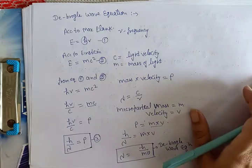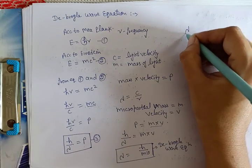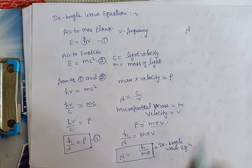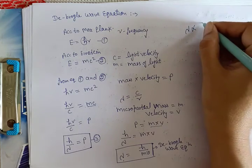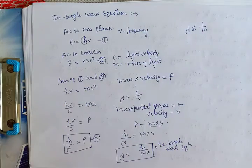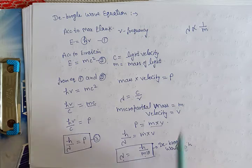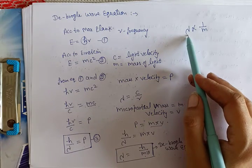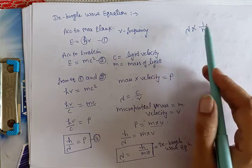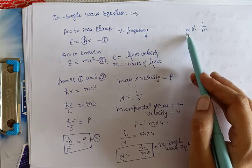اس equation میں wavelength lambda یہ inversely proportional ہوتا ہے mass کے۔ کسی بھی particle کا mass جیسے جیسے بڑھتا جائے گا اس کے ساتھ associate wavelength کی value کم ہوتی جائے گی means اس کے ساتھ جو جڑے ہوئے